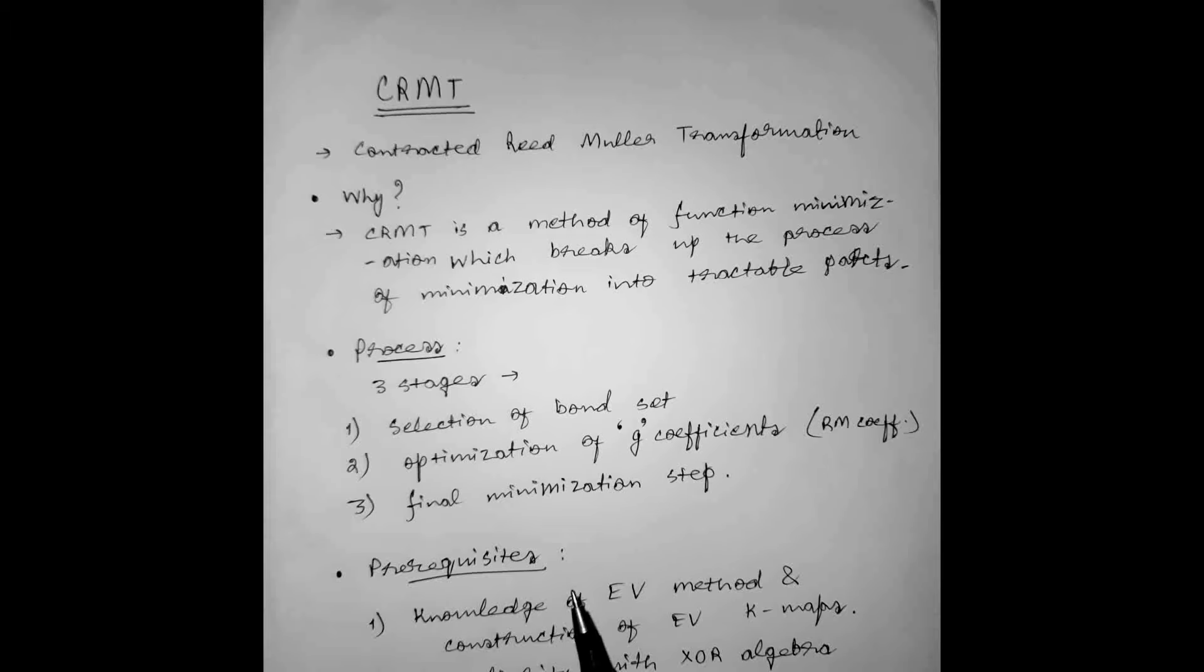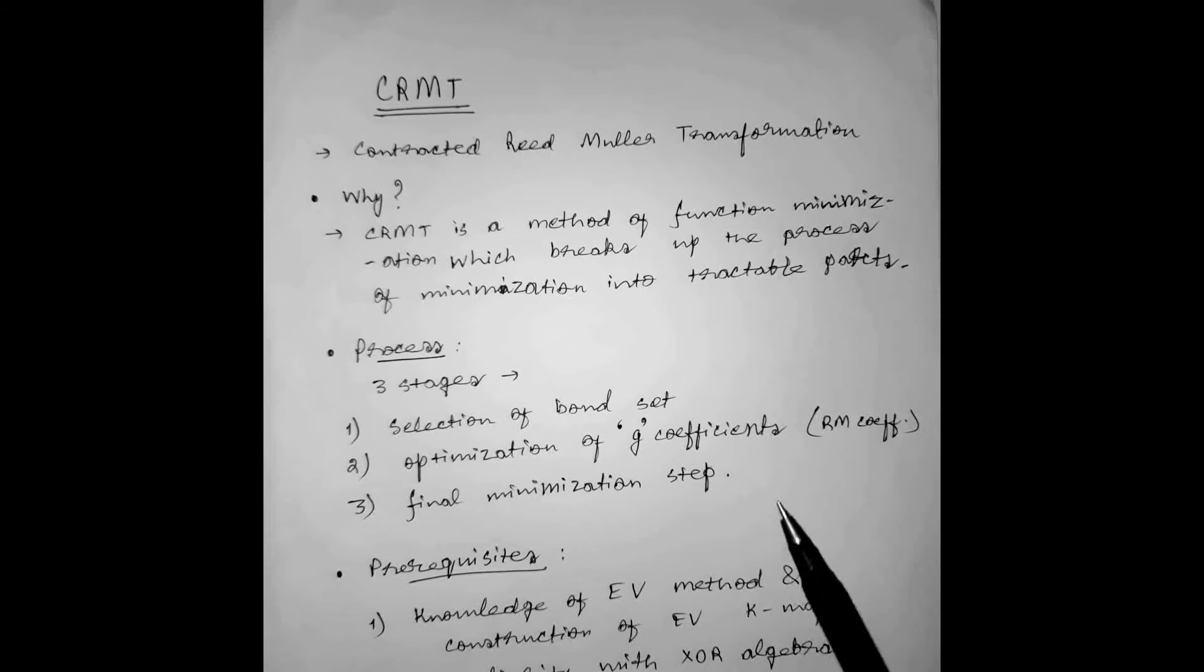Before moving on to the actual CRMT process, let's study the three stages which basically summarize the whole CRMT method. The first is selection of bond set. Second is optimization of G coefficients or Reed Muller coefficients. The third is final minimization step which will lead us to the desired result.